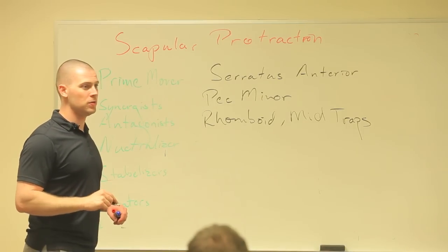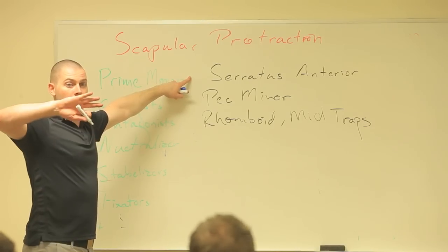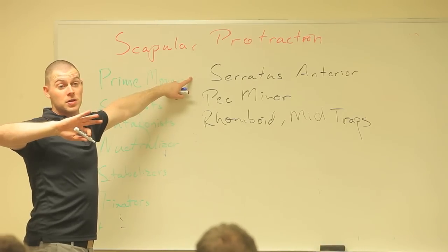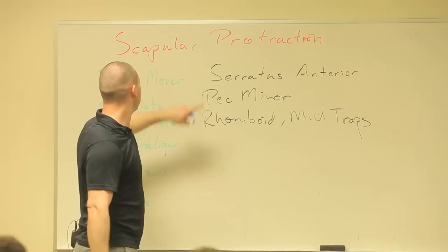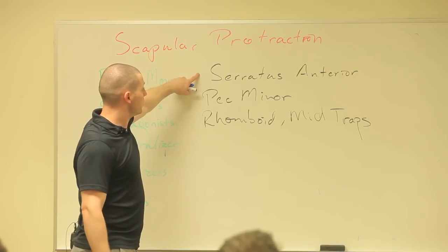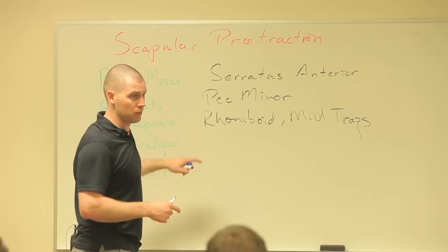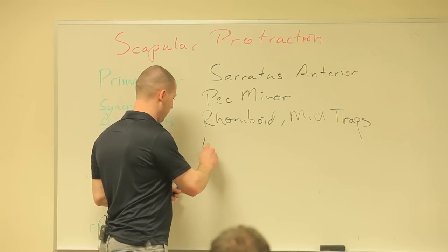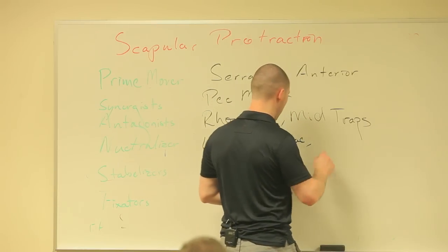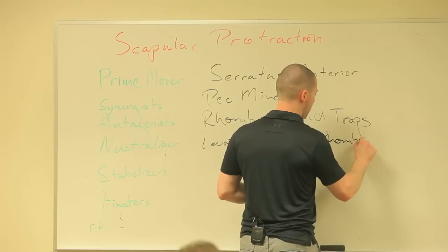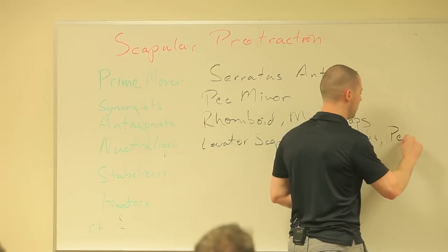Neutralizers: well, what are we trying to neutralize? Serratus anterior does protraction and upward rotation. We're going to say we need to neutralize the upward rotation force, which means I need to find all the muscles that do downward rotation. What are the downward rotators? Levator scapulae, rhomboids, and pectoralis minor.